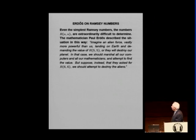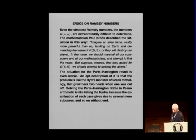So here, to understand the Ramsey number, here's how Erdős, a famous Hungarian mathematician, described the situation. Imagine an alien force, vastly more powerful than us, landing on Earth and demanding the value of R(5,5), or they will destroy our planet. In that case, we should marshal all our computers, all mathematicians, attempt to find the value. We may or may not, but we should try. But suppose, instead, they ask for six, we should attempt to destroy the aliens, even if they are vastly more powerful than us. Because, so, the situation for the Paris-Harrington result is worse.